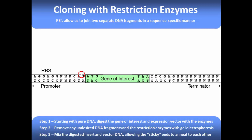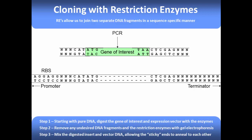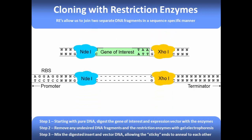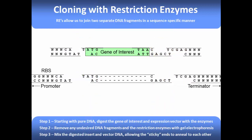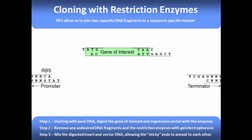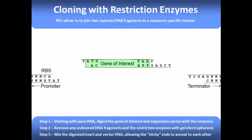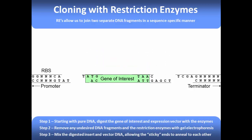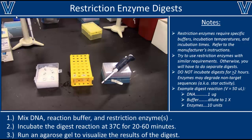We add a ligase enzyme to seal the phosphodiester backbone. To review: in a restriction digest, we add both restriction enzymes to cut our DNA and leave sticky ends; we then remove the DNA fragments we don't want — the old gene and ends of the PCR product — using gel electrophoresis; we mix our gene of interest with the plasmid backbone and let the sticky ends anneal; and finally we seal the phosphodiester backbone with ligase, giving us our new plasmid.